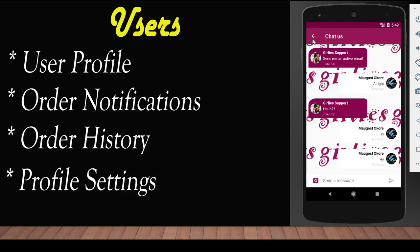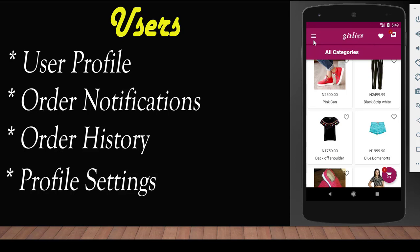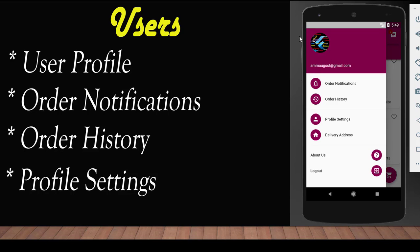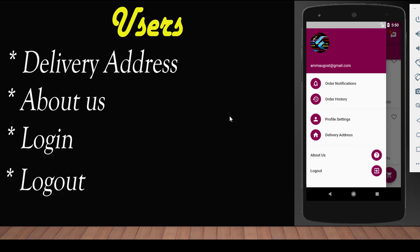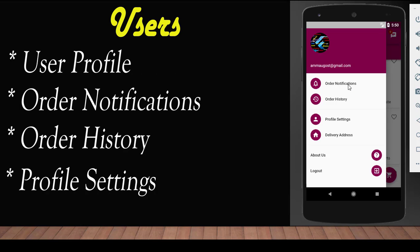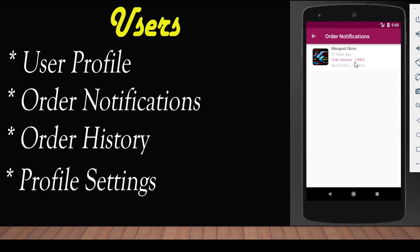Then you also have the user profile, located at this hamburger icon here. You click on the hamburger icon and you'll see the user profile — user image, email address, the name. Then you see order notifications, order history, profile settings, delivery address, about us, login, and logout. The order notifications section covers the current active transactions of the user.